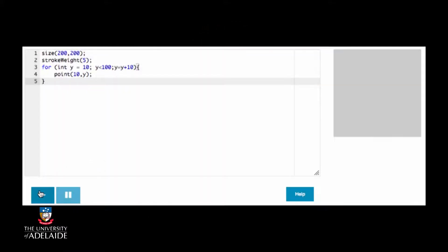We saw how we could draw vertical points using a for loop. To do that, we used this code, which gave us this output.